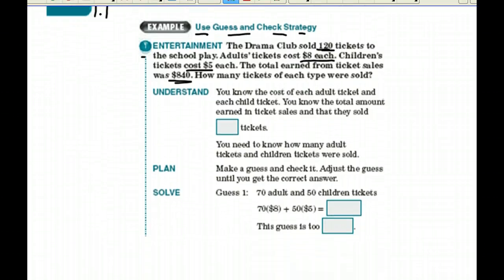To understand it, you know the cost of each ticket, adult ticket and child ticket. Adult ticket was $8. Child ticket was $5. You know the total amount earned. That was $840 in ticket sales, and that they sold 120 tickets.